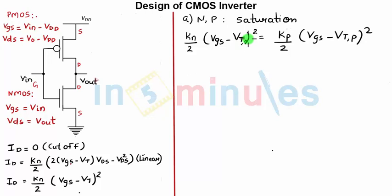Now let's rearrange these terms and take the square root and substitute VGS equal to VIN for NMOS and for PMOS VGS equal to VIN minus VDD and take the square roots.